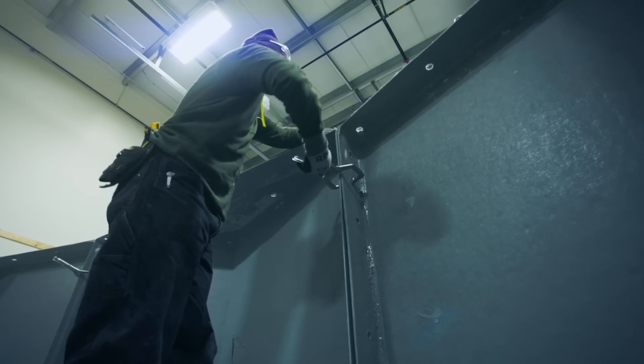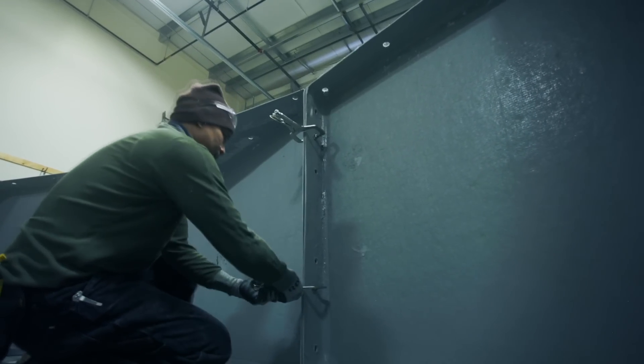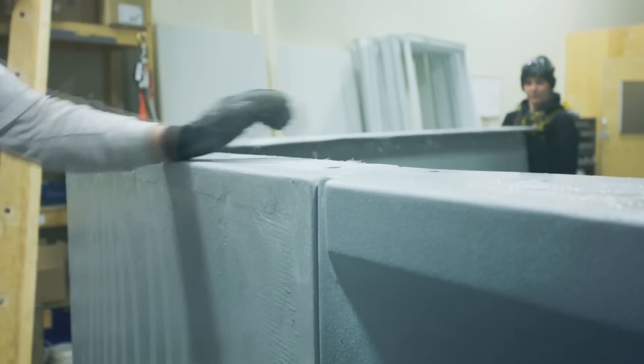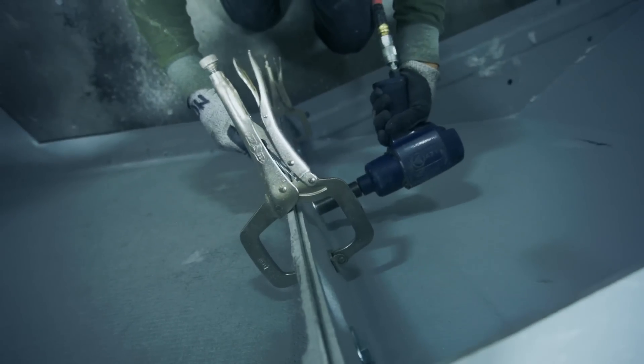During assembly, the components are c-clamped together to ensure flush assembly and then secured with a three-bolt washer assembly through pre-drilled holes on the flanges and then bolted to the perimeter base.